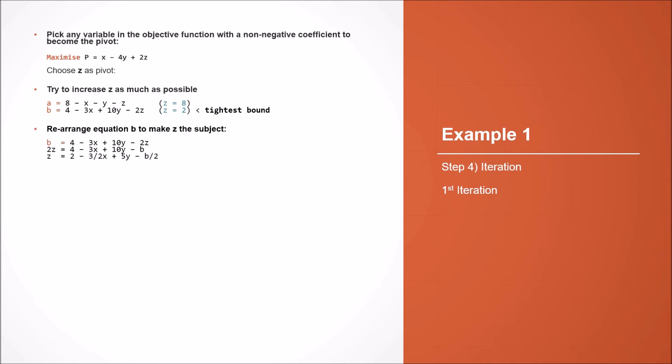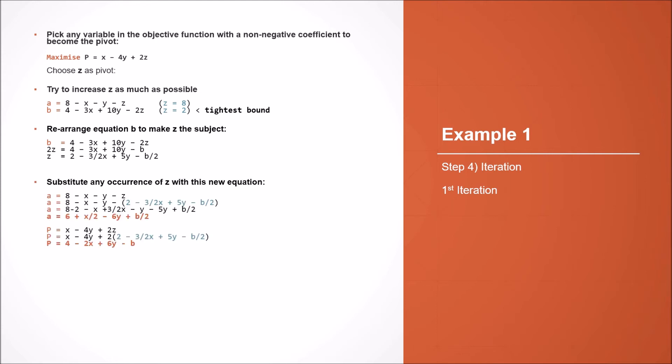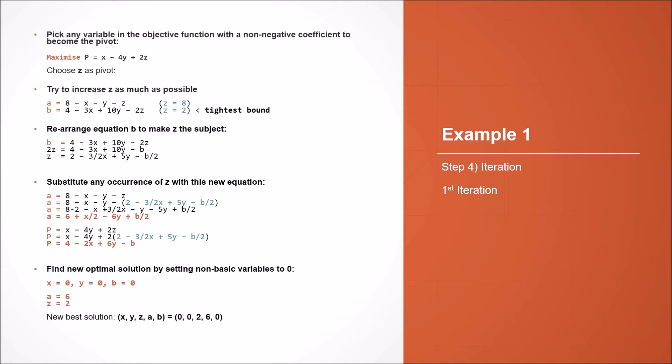We now select equation b, rearrange it to make z the subject, and substitute this new equation for all occurrences of z in our objective function and other equations. We can find our new optimal solution by setting the non-basic variables — x, y, and b — to 0. This gives us a equals 6 and z equals 2, with a p-value of 4 when we substitute our values back in.